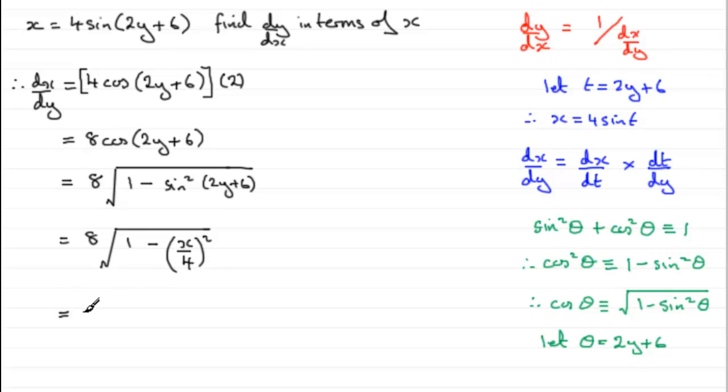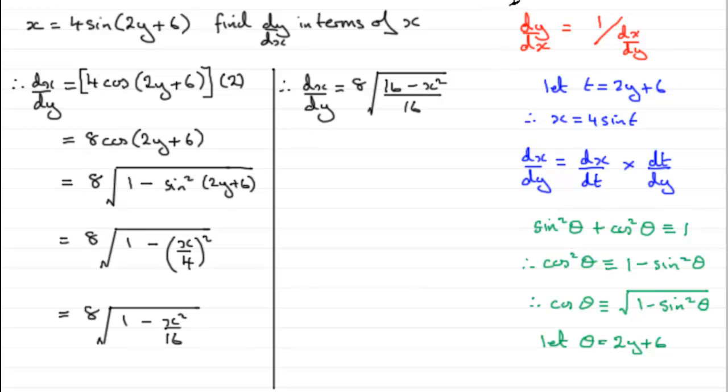And if we tidy this up, we've got 8 multiplied by the square root of 1 minus x squared over 16. And it's not good to have 2 terms here in a square root. Whenever you get a square root, it's always good if you can get it down to 1 term. And we can do that here. We can put this all over a common denominator of 16. So we've got that therefore, dx dy still equals, we've got the 8 multiplied by the square root. Now, the 1 we can think of as 16 over 16. So we've got 16 minus x squared all over 16.